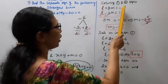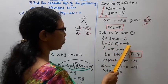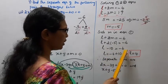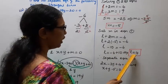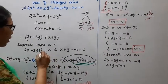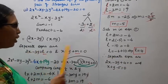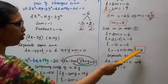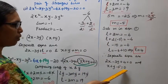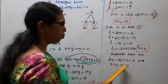Substituting m into equation 1: L plus 2m equals minus 6. Substituting m equals minus 5: L plus 2 into minus 5 equals minus 6. L minus 10 equals minus 6. L equals minus 6 plus 10 equals 4. So L equals 4 and m equals minus 5. The separate equations are: 2x plus 4 equals 0 and x plus y minus 5 equals 0.